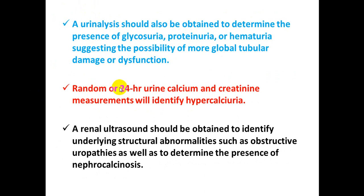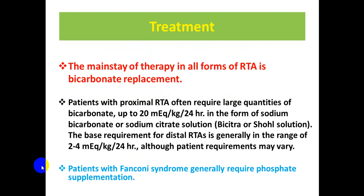A random or 24-hour urine calcium should be measured to identify hypercalciuria if present. A renal ultrasound should be obtained to identify underlying structural abnormalities such as obstructive uropathies, as well as to determine the presence of nephrocalcinosis.